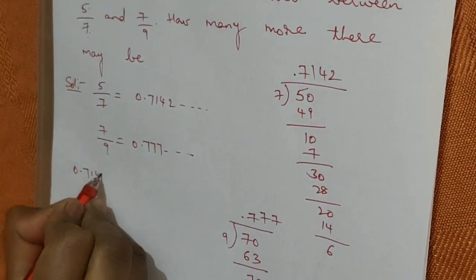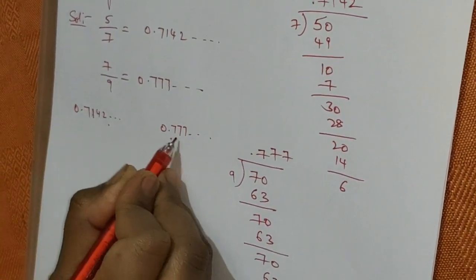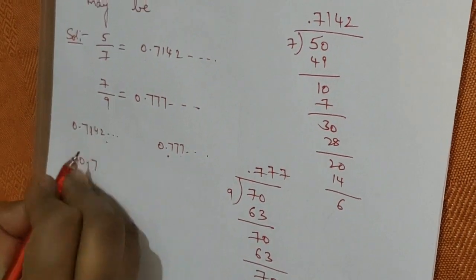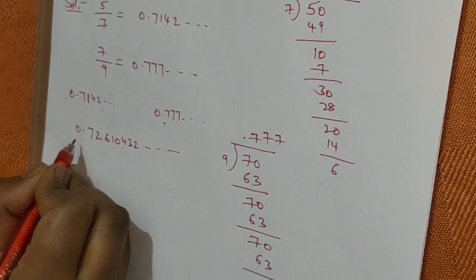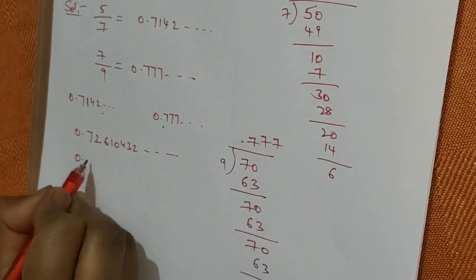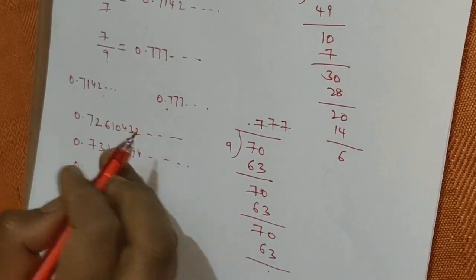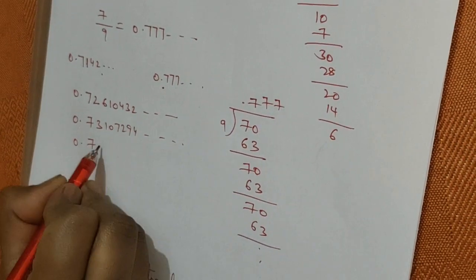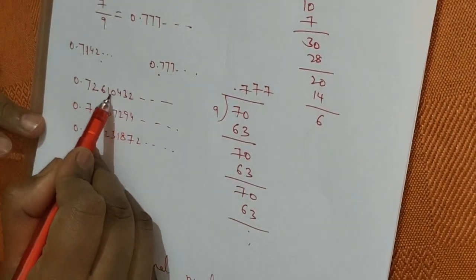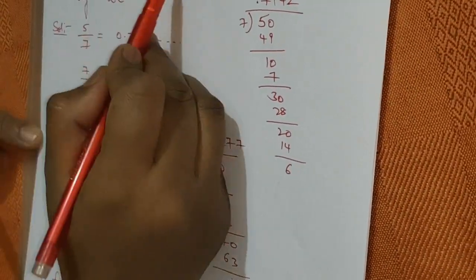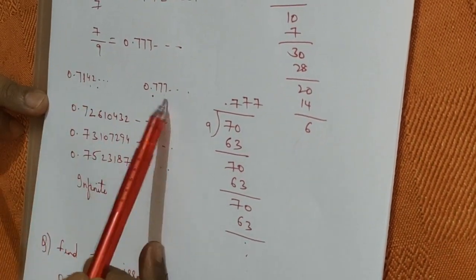Now between 0.7142... and 0.777..., we can insert any number of decimals. The second decimal digits range between 1 and 7. So I can write 0.7261043, and by changing the digits you can write any number of irrational numbers. For example, 0.73107294 or 0.75231872 and so on. In this way, how many can we insert? We can insert infinitely many irrational numbers between these two values.